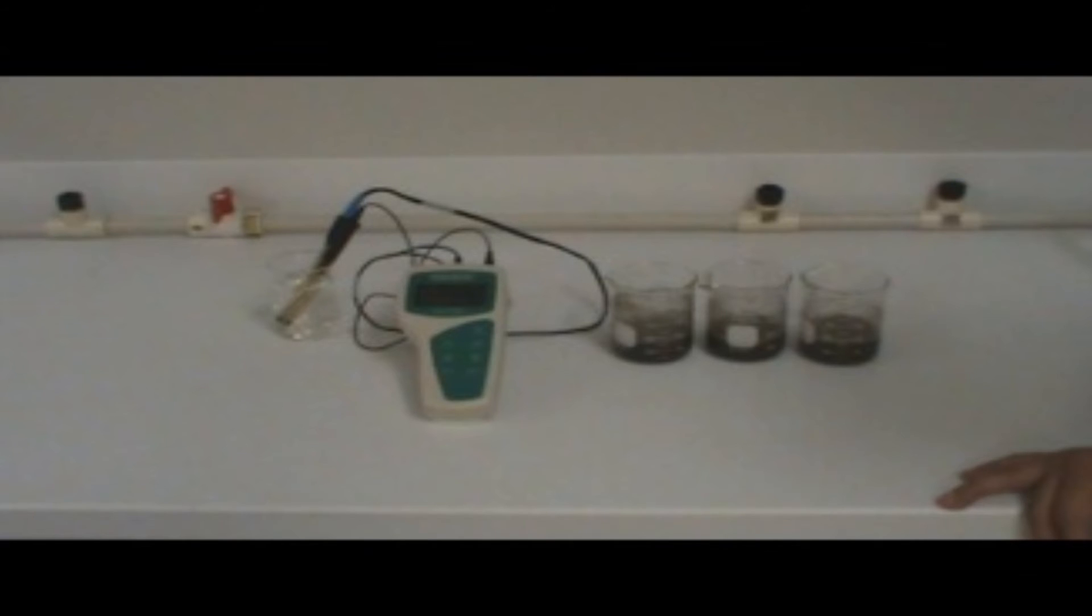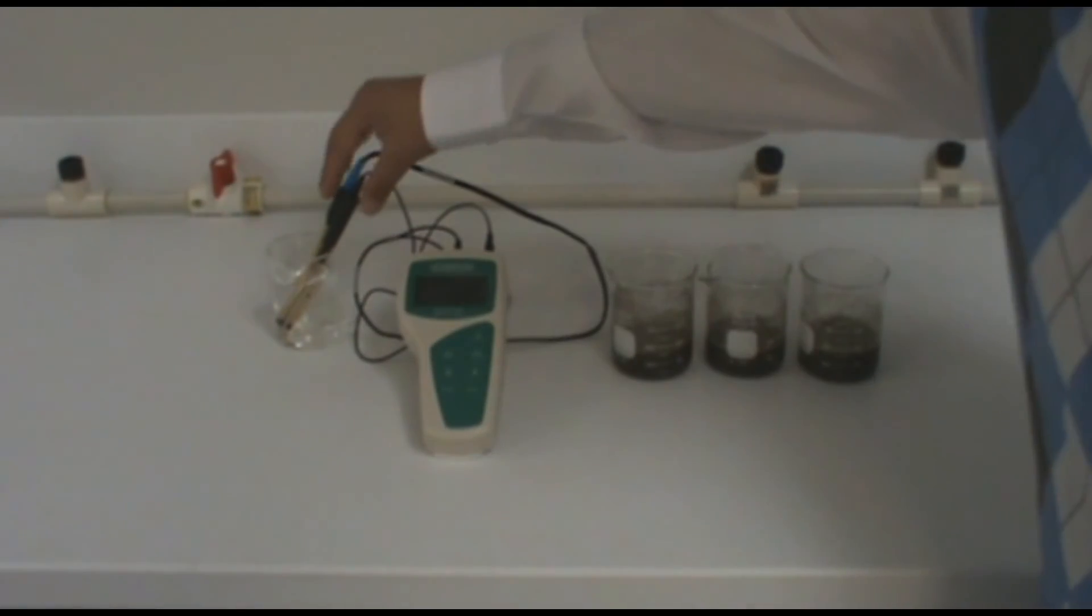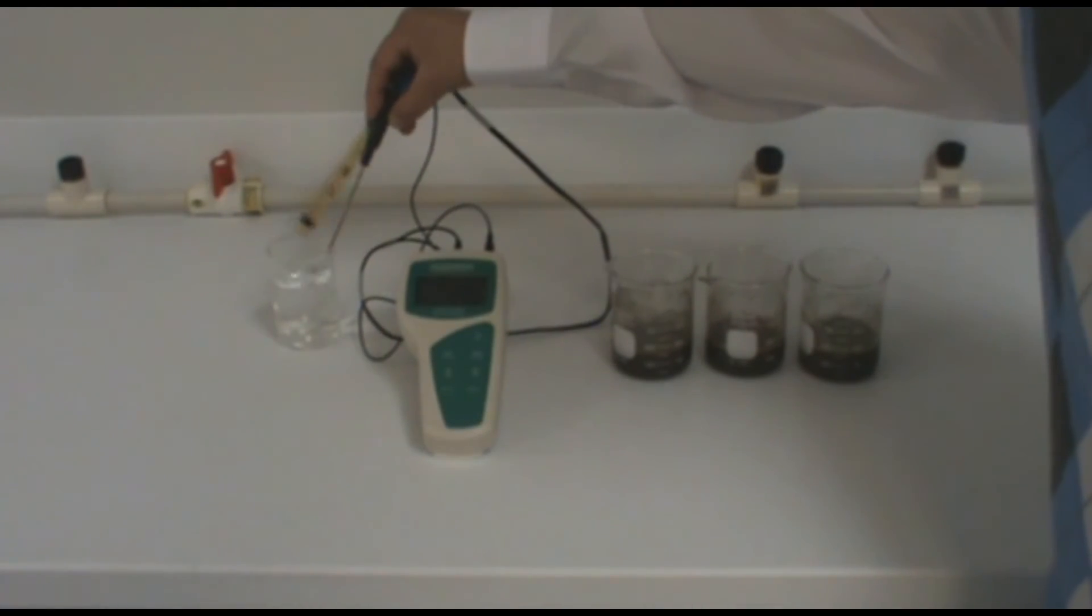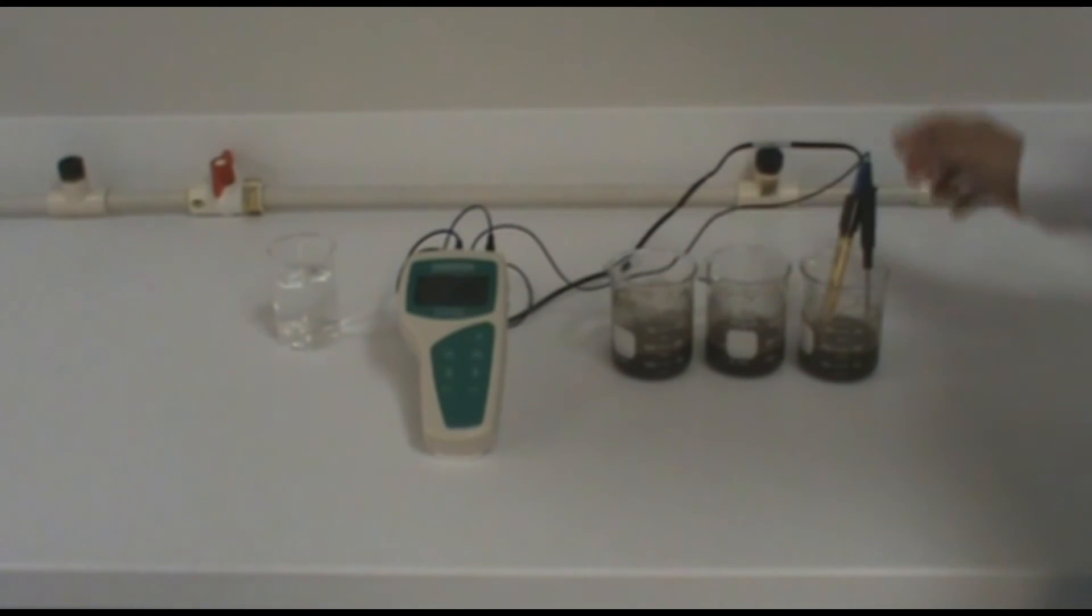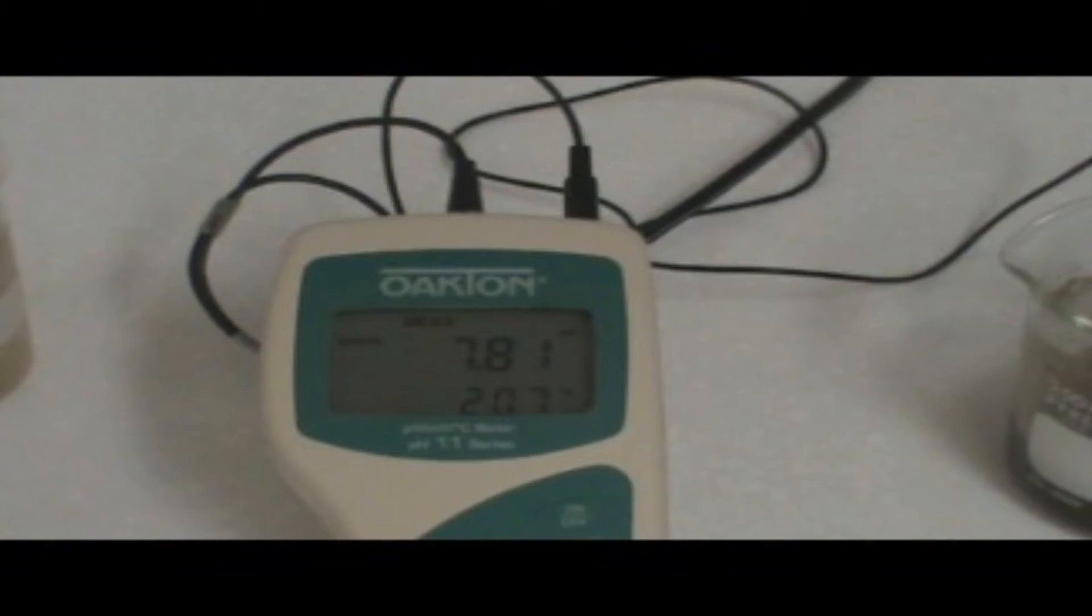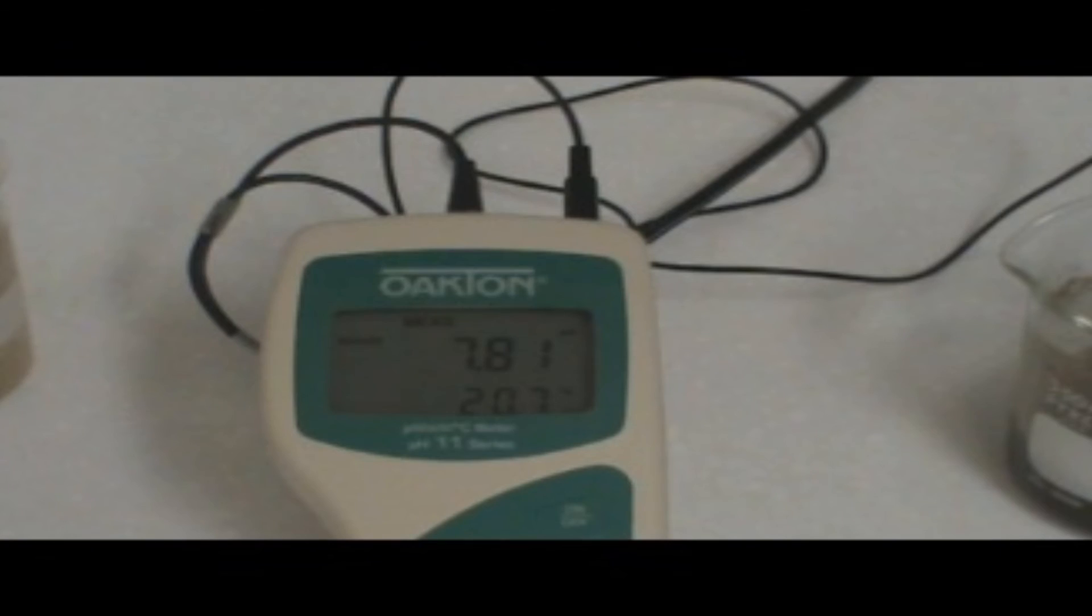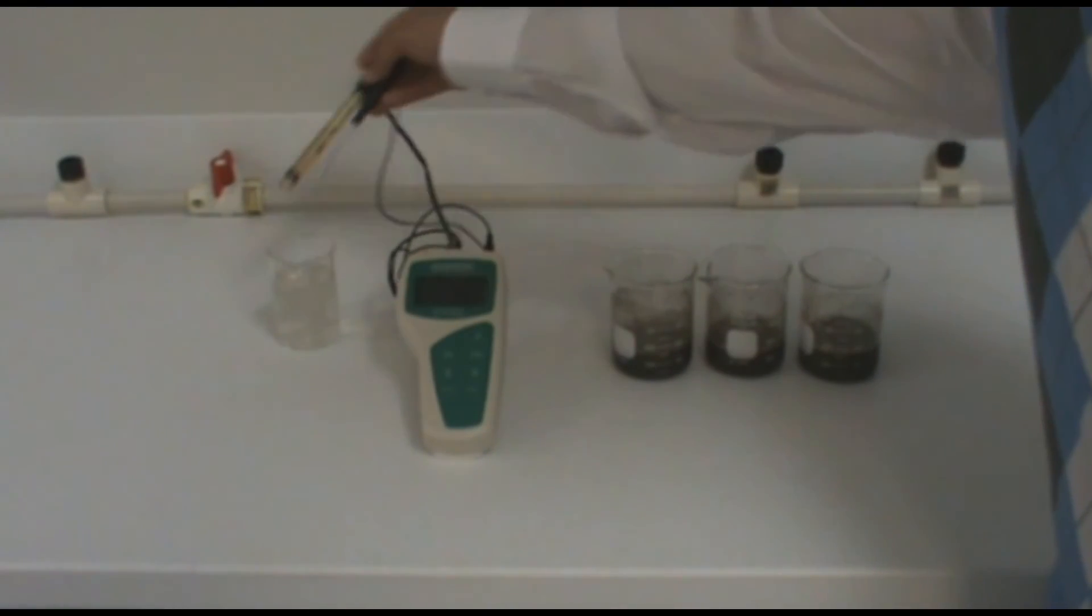For time purposes, the pH meter and electrode being used have already been calibrated. Take the pH electrode and ATC probe and place them in the first soil sample. Allow the reading to stabilize and record this reading. You will then follow the same procedure for your next two samples.